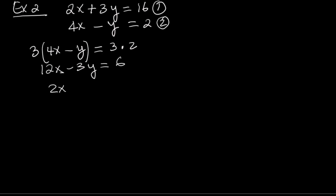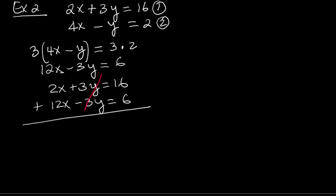That gives 12x minus 3y equals 6. Now bring down the first equation: 2x plus 3y equals 16. Adding both equations together: negative 3y plus 3y cancels out. 12x plus 2x is 14x. 6 plus 16 is 22. Now we have 14x equals 22.